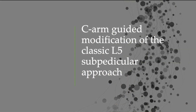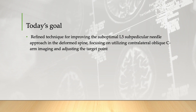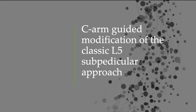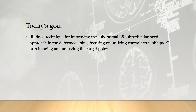In today's session, we will examine a refined technique for improving the suboptimal L5 sub-radicular needle approach in the deformed spine, focusing on utilizing contralateral oblique C-arm imaging and adjusting the target point effectively. In the upcoming patient case, you'll encounter a spine deformity and a constricted window for needle trajectory. These factors introduce difficulty maneuvering the needle, and reaching the ideal final needle position becomes a formidable task, often demanding a shift in strategy to ensure precise needle placement.